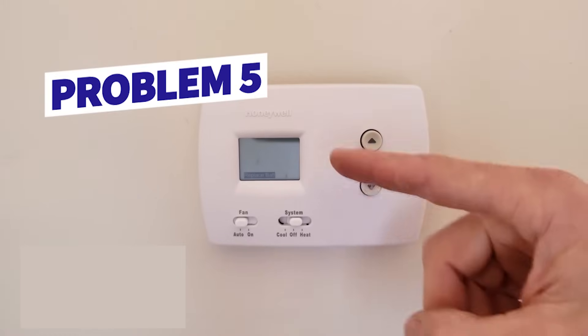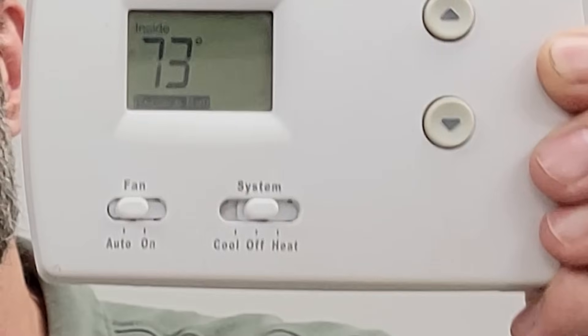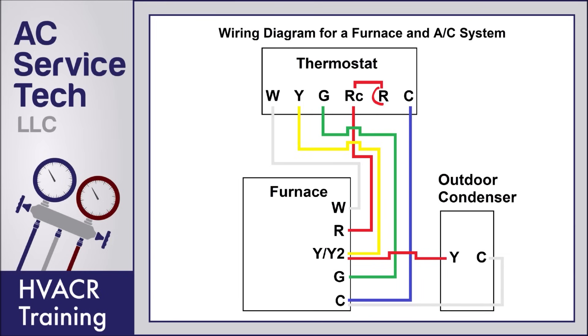Number five could be that you just have low batteries in your thermostat. You can see a flashing low battery indicator. If you have low batteries, the switching mechanism inside is not going to be strong enough to close the electrical contacts between the R wire and the Y wire, which is the air conditioning wire. R also connects to G, which is the fan wire. It's just not strong enough to make the switch electrically close inside the thermostat, so make sure you have good quality batteries — I typically use Duracell.